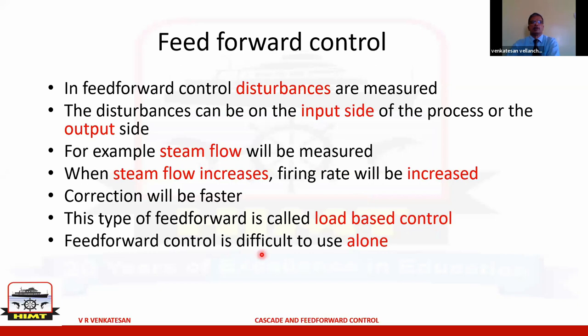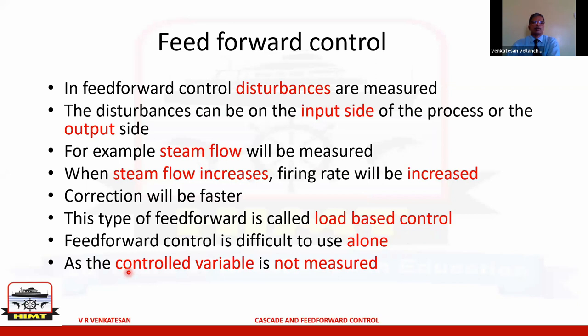Feed forward control is difficult to use alone — without feedback — because the actual controlled variable is not measured. For boiler combustion, the controlled variable is steam pressure. In feed forward, what you are measuring is the steam flow. Without measuring the steam pressure, it is not possible to control exactly. So feed forward alone is insufficient; it needs to be combined with feedback.